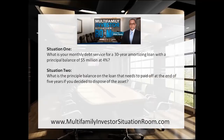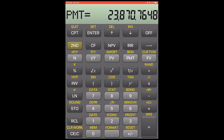Now that we know the answer to situation one, let's take a look at situation two: what is the principal balance on the loan that needs to be paid off at the end of five years if you decided to dispose of the asset? We can use our calculator to perform a simple calculation. Now that we've pulled up our financial calculator again on the iPad or iPhone, remember that in situation one we calculated this monthly loan repayment. All we need to do is click payment again — do not clear out this number because we're going to use it again.